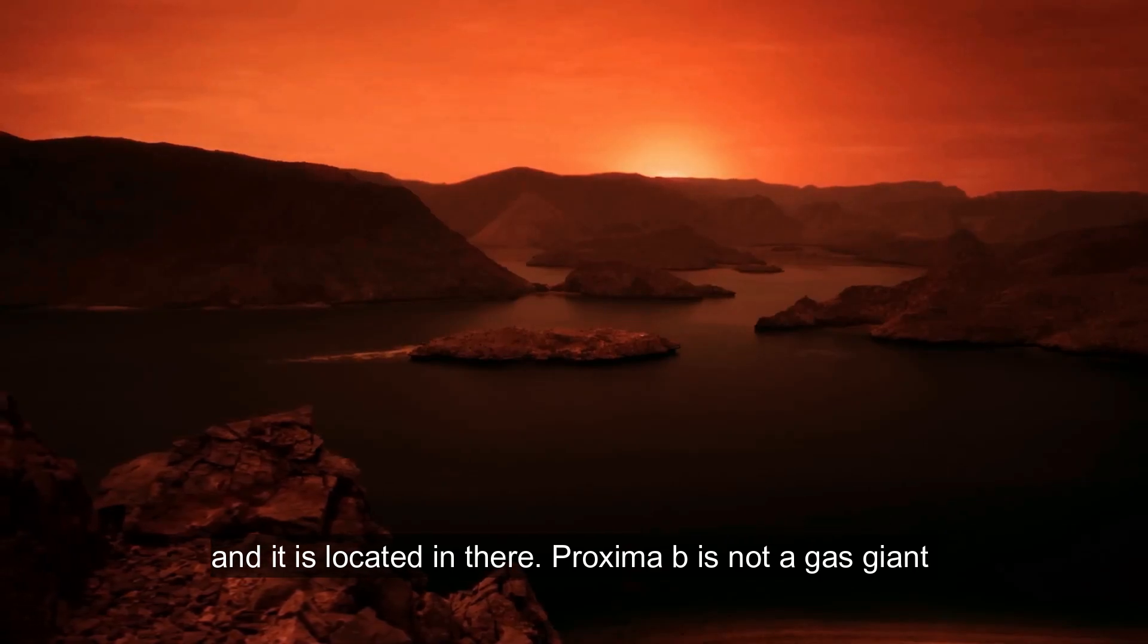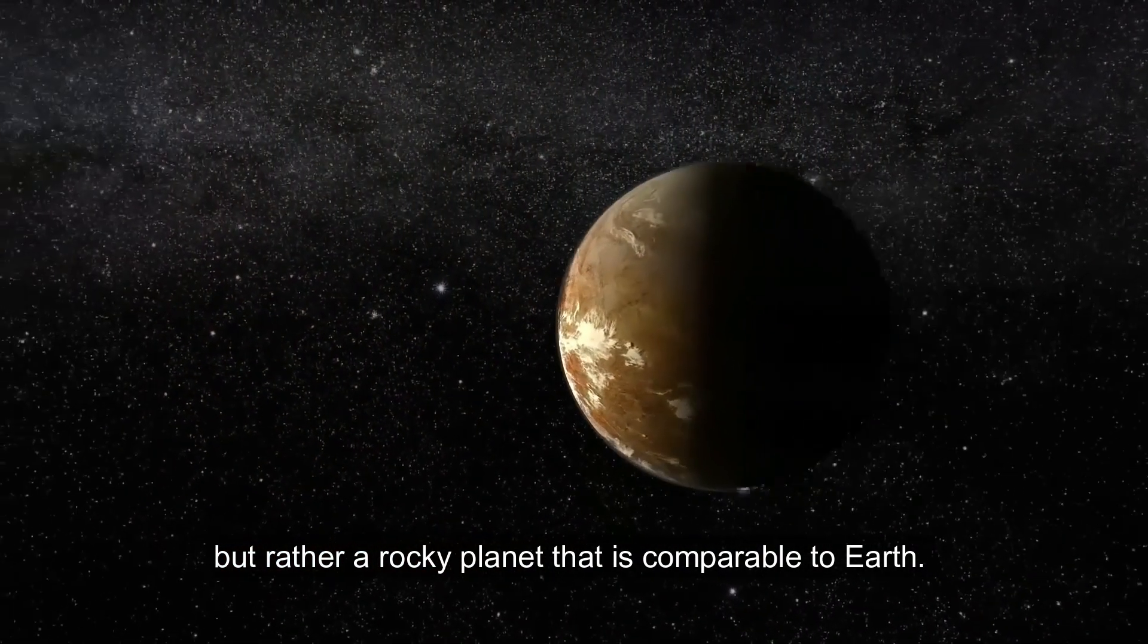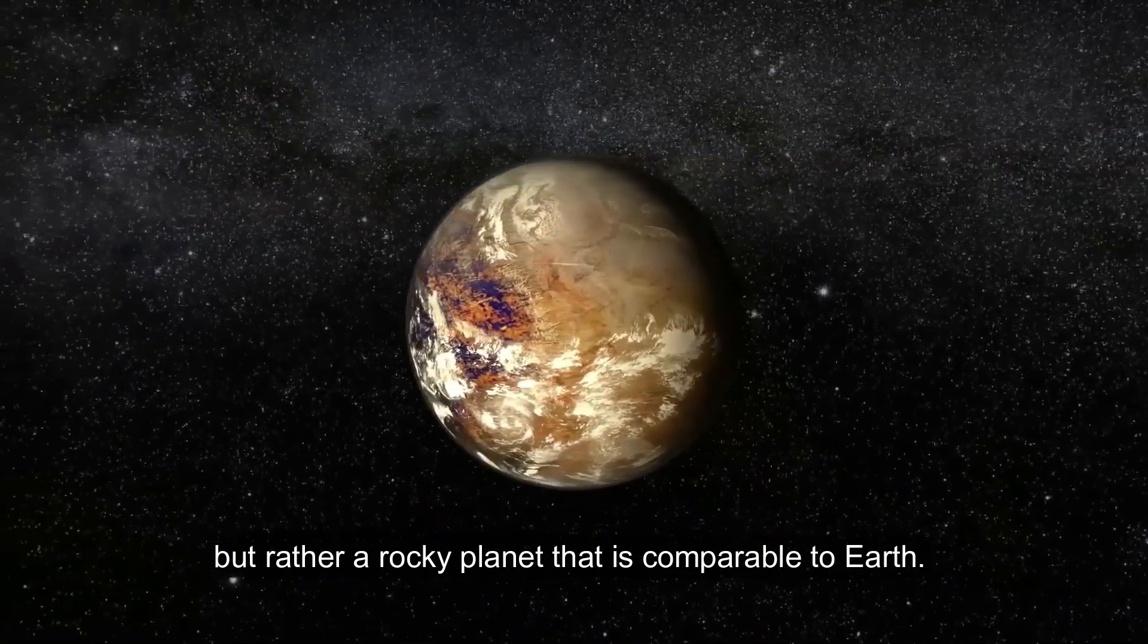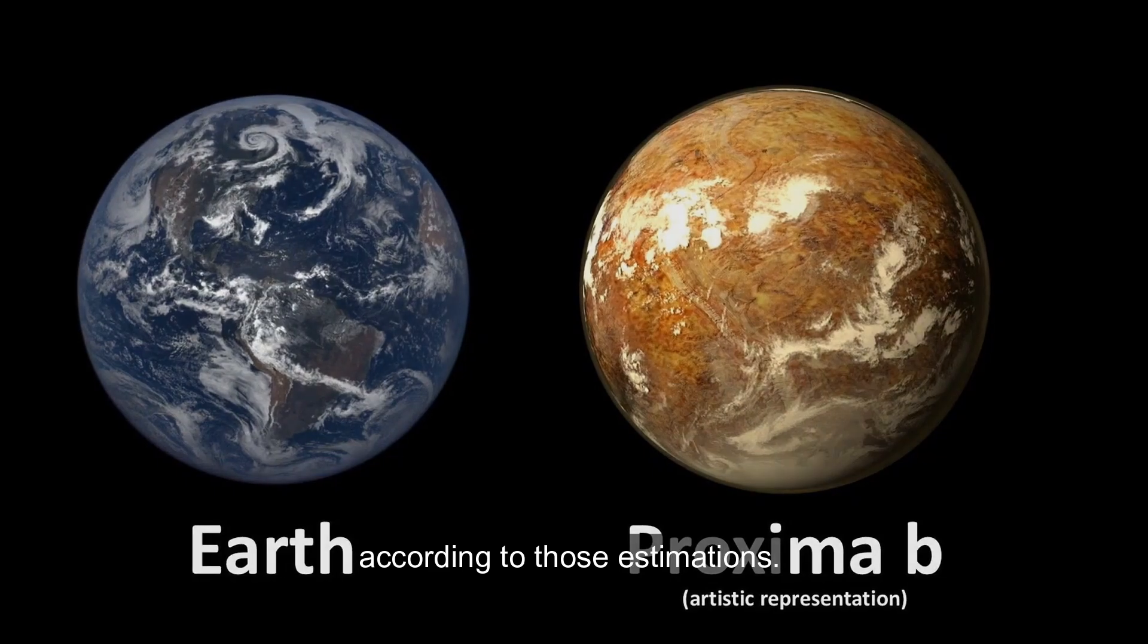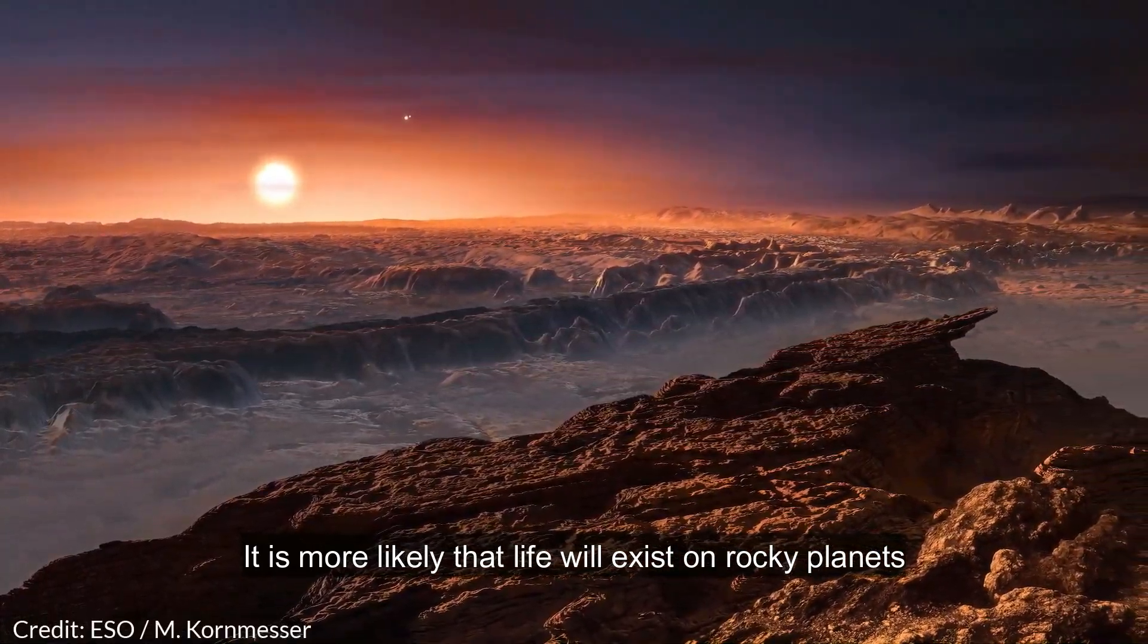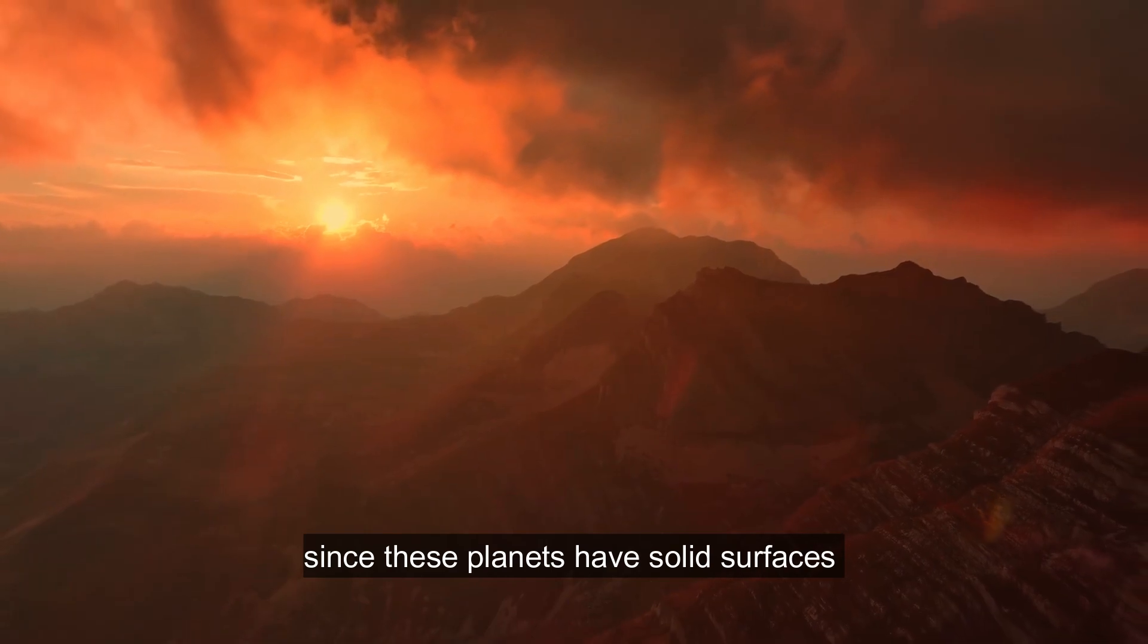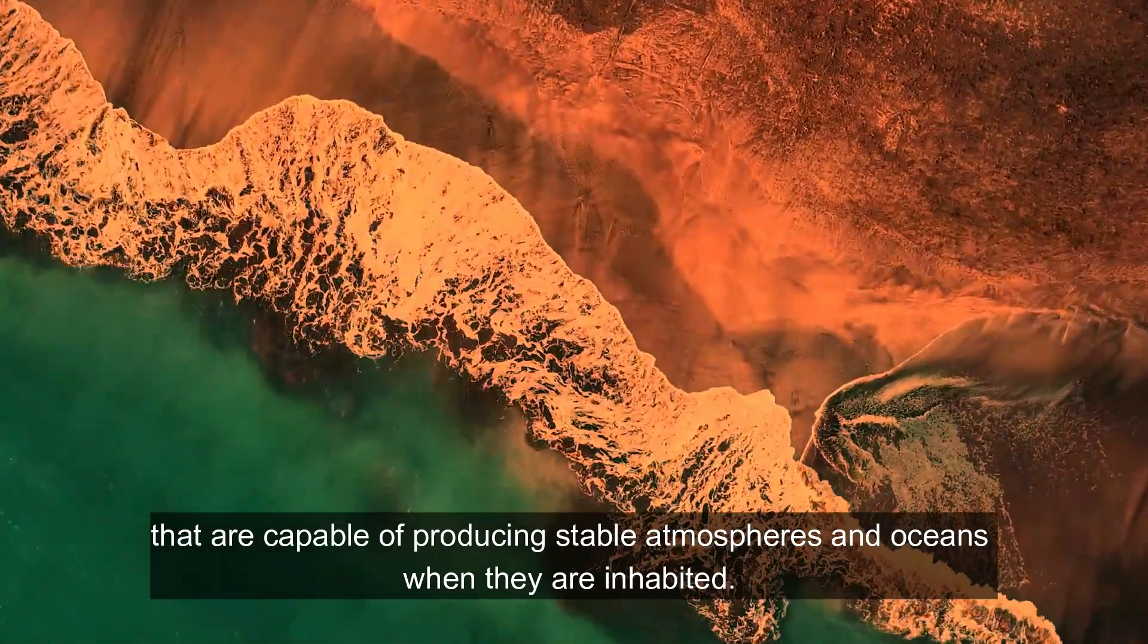Proxima B is not a gas giant, but rather a rocky planet that is comparable to Earth. Its mass and size are around 1.17 times that of Earth, according to those estimations. It is more likely that life will exist on rocky planets since these planets have solid surfaces that are capable of producing stable atmospheres and oceans when they are inhabited.